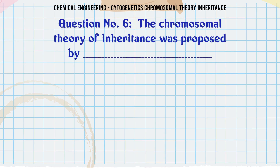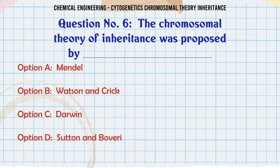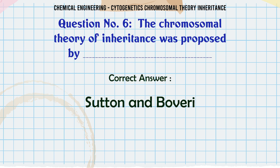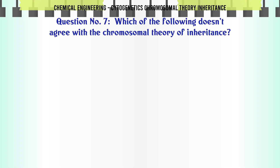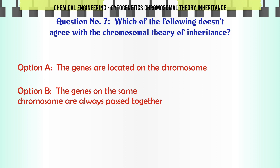The chromosomal theory of inheritance was proposed by: A: Mendel. B: Watson and Crick. C: Darwin. D: Sutton and Boveri. The correct answer is Sutton and Boveri.